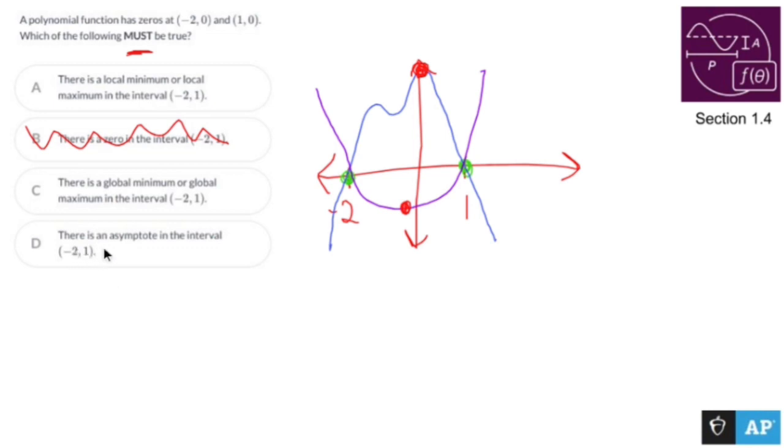There is an asymptote? No. So the rule states that there is going to be a max or a min, and the rule states that it has to be local.